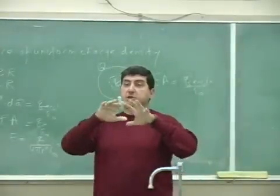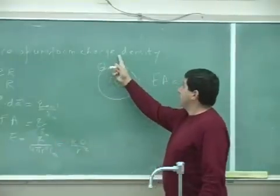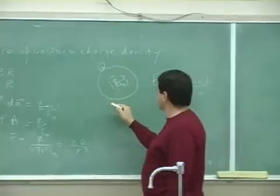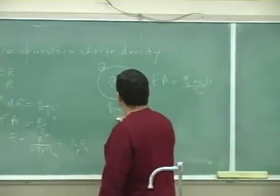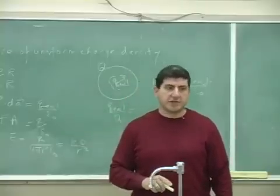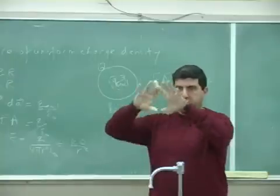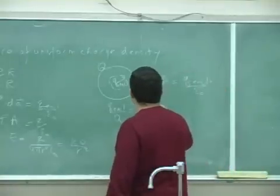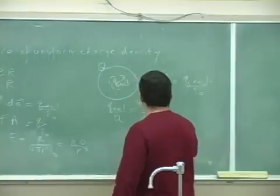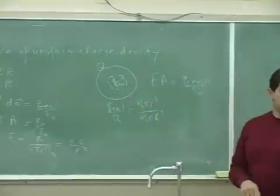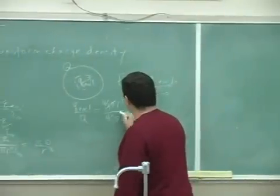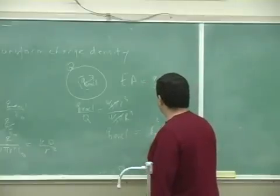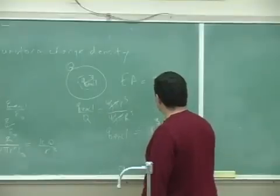Here's the argument: if the charge density is uniform, then the ratio of Q enclosed to Q equals the ratio of their volumes, because this is a three-dimensional object. So that ratio is (4/3 π r³) over (4/3 π R³). This gives us: Q enclosed equals (r³ / R³) times Q.